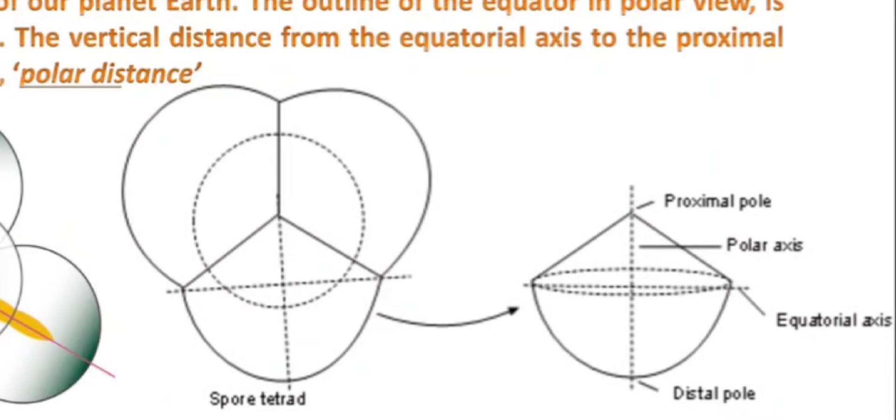When you are viewing a spore in polar view, either distal polar view or proximal polar view, what you are seeing is the outline of the equator. That outline is called the amb of a spore. The polar distance is the distance between the proximal pole and the center of the spore.